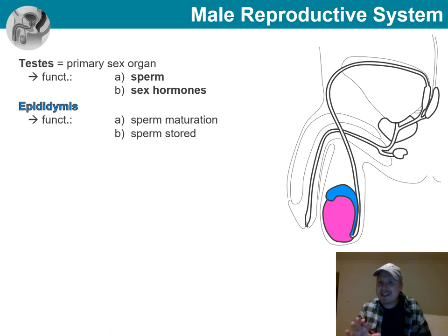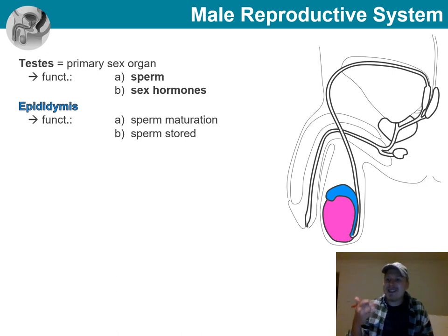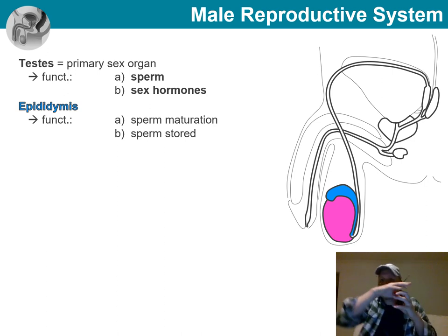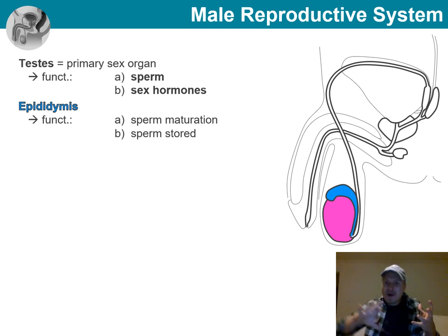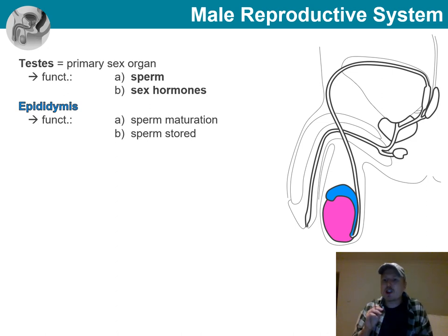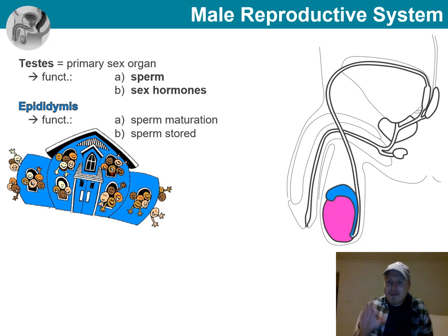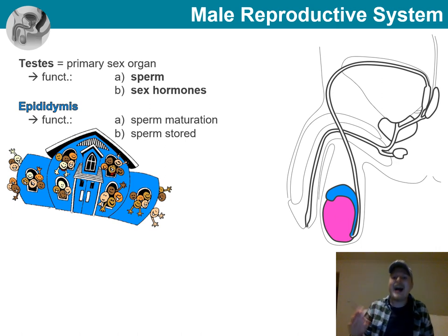The next structure is the epididymis. Once sperm has been produced in the testes, it travels to this thin, coiled tube packed tightly and laying on top of the testes. This is the site where sperm goes to mature until it's ready to be used. It takes about 20 days for the sperm — which is initially non-motile when it enters — to pass slowly through the structure and mature into motile, fully functional sperm. It is also stored here until ready for use, which can be for several months. One former student found it helpful to think of it as: even sperm has to go to school.